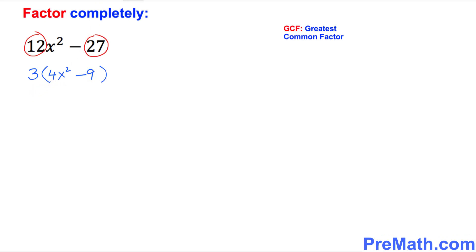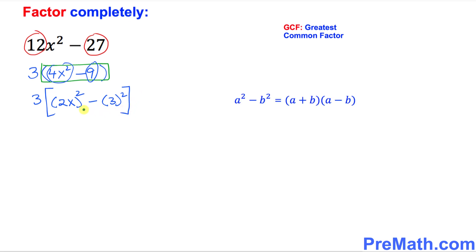Now the next step is I want you to focus on this part inside the parentheses. So let me just write it down. 4x square could be written as 2x whole power 2, and likewise 9, minus 9, could be written as 3 square. Right here this represents a difference of two squares, so we're going to be applying this formula.